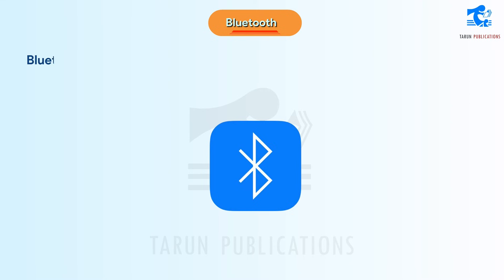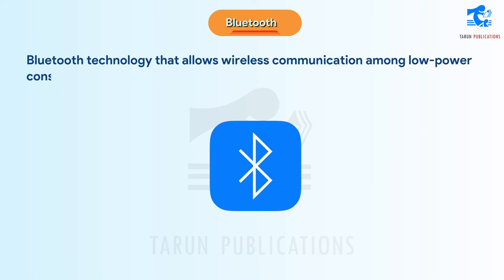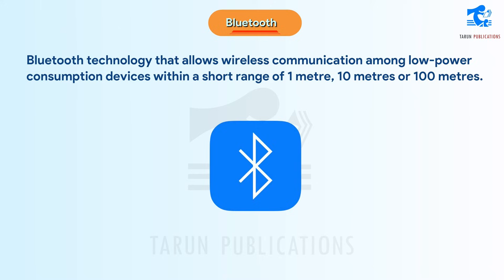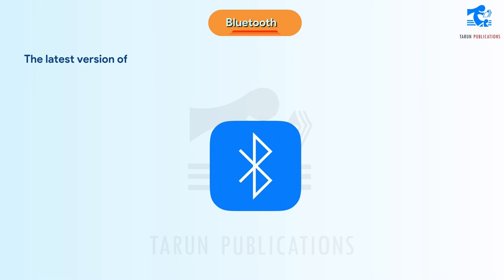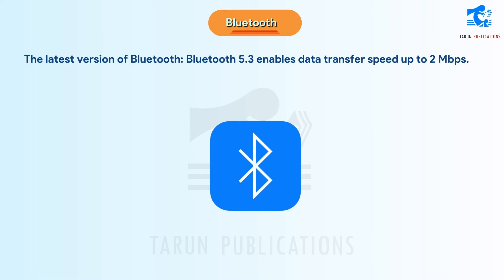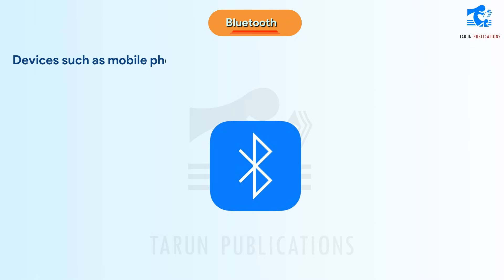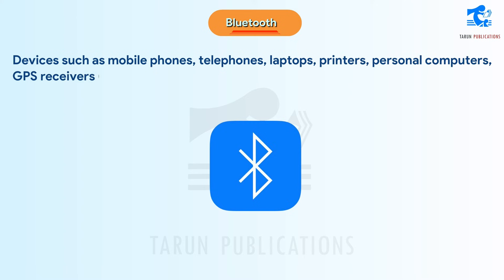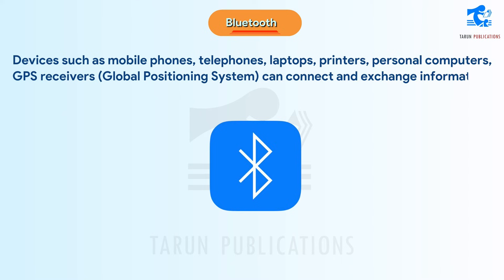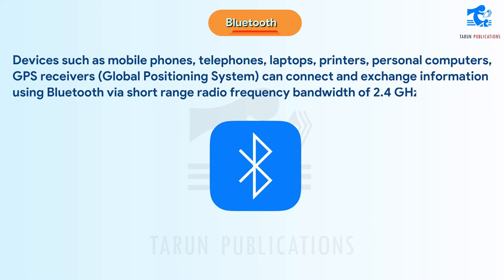Bluetooth technology allows wireless communication among low-power consumption devices within a short range of 1 meter, 10 meters, or 100 meters. The latest version, Bluetooth 5.3, enables data transfer speed up to 2 megabits per second. Devices such as mobile phones, telephones, laptops, printers, computers, GPS receivers can connect and exchange information using Bluetooth via short-range radio frequency bandwidth of 2.4 GHz.